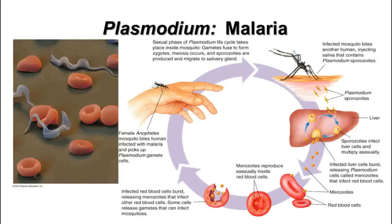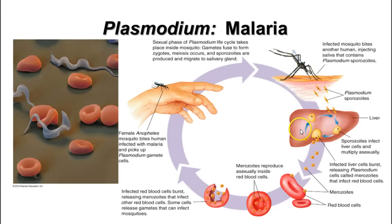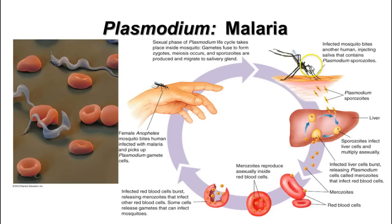Let's look at the life cycle of plasmodium, which involves two species: the human and the mosquito. When the mosquito bites a human, it injects sporozoites that travel through the bloodstream to the liver, growing inside liver cells to produce merozoites. The merozoites enter the bloodstream and infect red blood cells, reproducing inside them. When the blood cells break open, gametes are released and can be picked up by another mosquito, where they fuse and produce sporozoites that migrate to the salivary glands, ready to be injected into the next host.